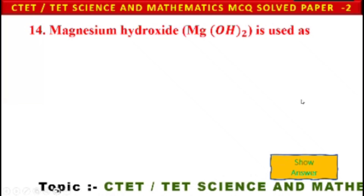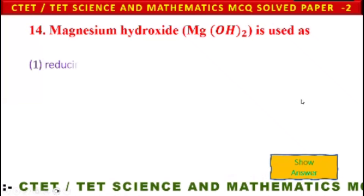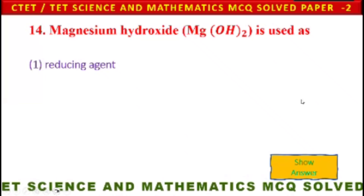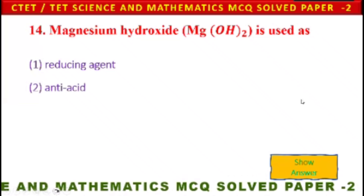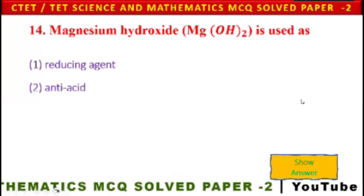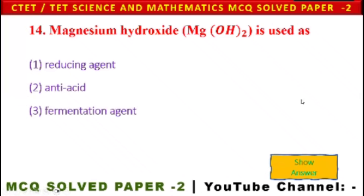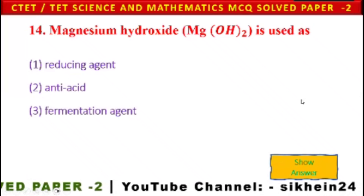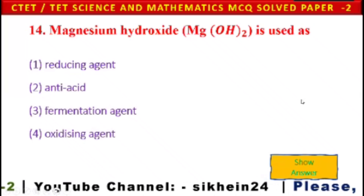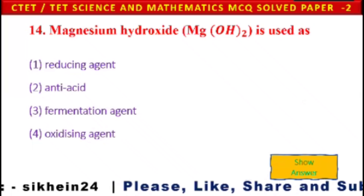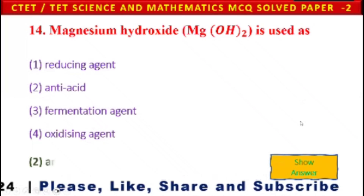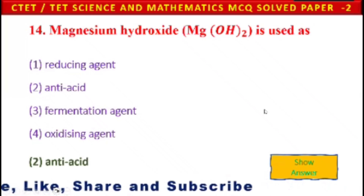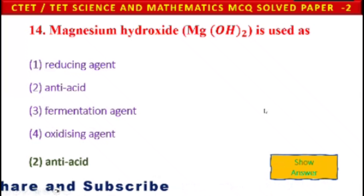Next question: Magnesium hydroxide is used as — 1) reducing agent, 2) antacid, 3) fermentation agent, 4) oxidizing agent. The answer is antacid — magnesium hydroxide is used as an antacid.